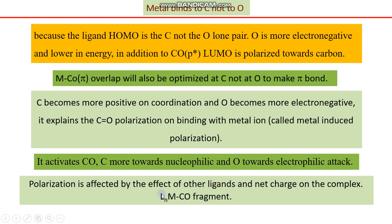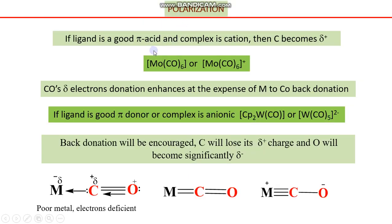In the general representation, Ln represents a ligand where n is the number attached to the metal center, depending on the nature of the metal. For octahedral species, n can range up to five, while for tetrahedral and square planar species n can be three. In this way we can explain the polarization of carbon monoxide being induced by the metal-ligand fragment.